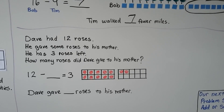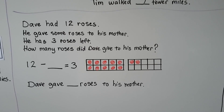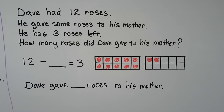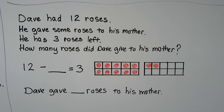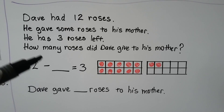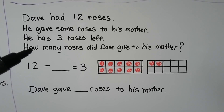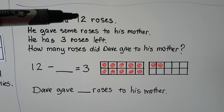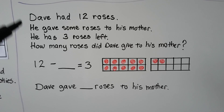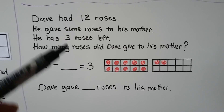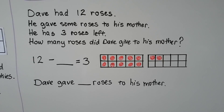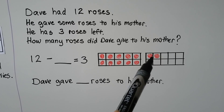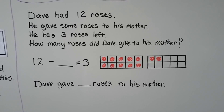Dave had 12 roses. He gave some roses to his mother. He has 3 roses left. How many roses did Dave give to his mother? So what do we need to find? We need to find how many roses Dave gave to his mother. What information do we need to use? We need to use that he had 12 roses and he only has 3 left. We can use a 10 frame and make counters for roses: 10, 11, 12. That would be the 12 roses.